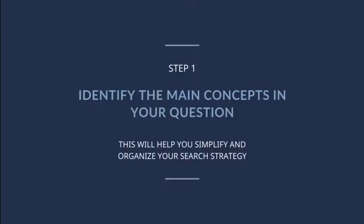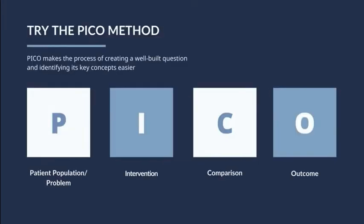Step 1. Begin by identifying the main concepts in your question. This will help you simplify and organize your search strategy. If you have a clinical question, you can use the PICO acronym to identify and separate its key concepts. PICO stands for patient population or problem, intervention, comparison, and outcome.